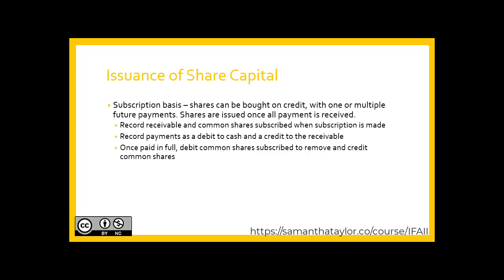When the subscription is issued, we would first record the accounts receivable specific to that subscription and credit the common shares subscribed within equity. Then as the receivable is being paid down—debiting cash and crediting that receivable—the common shares subscribed stays the same. Once there is no longer an amount outstanding and cash is all received, we would debit common shares subscribed and credit the common shares for those share issuances.